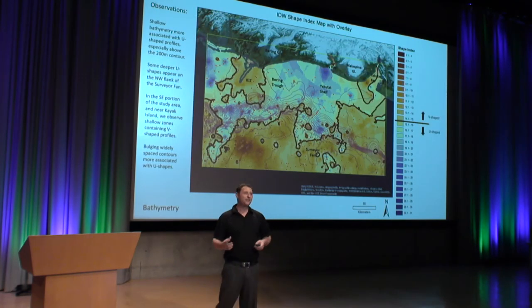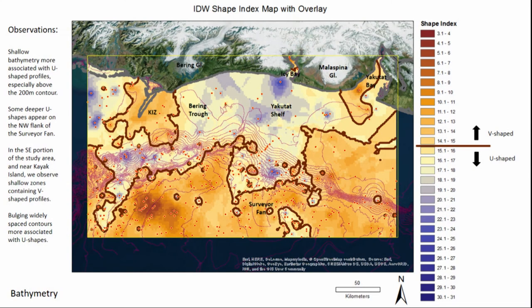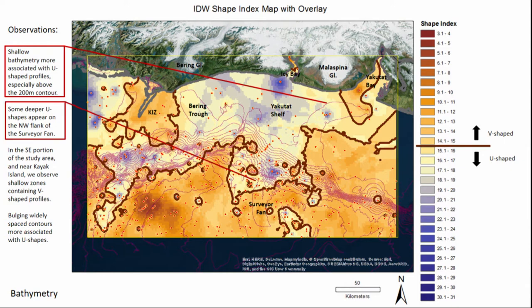Now we want to compare this to bathymetry, faults, et cetera. We see that shallow bathymetry is more associated with U-shaped profiles than deep bathymetry — this line points to the 200-meter contour. Some deeper U-shapes appear on the northwest flank of the Surveyor Fan, which I've highlighted here. Swartz was focused on this too and identified it as a troughmouth fan, and I agree.